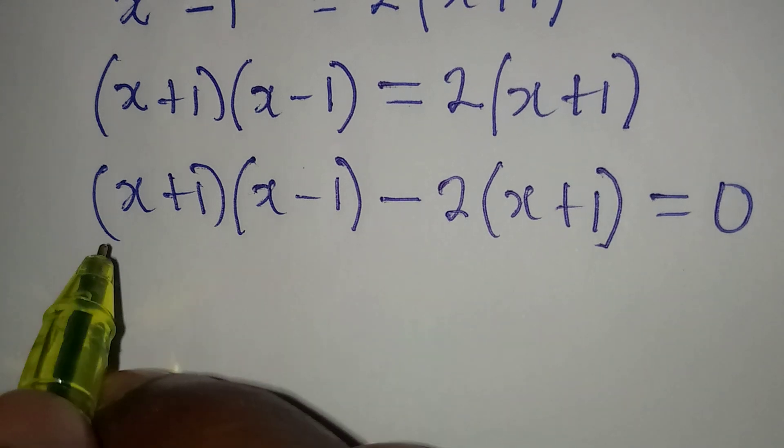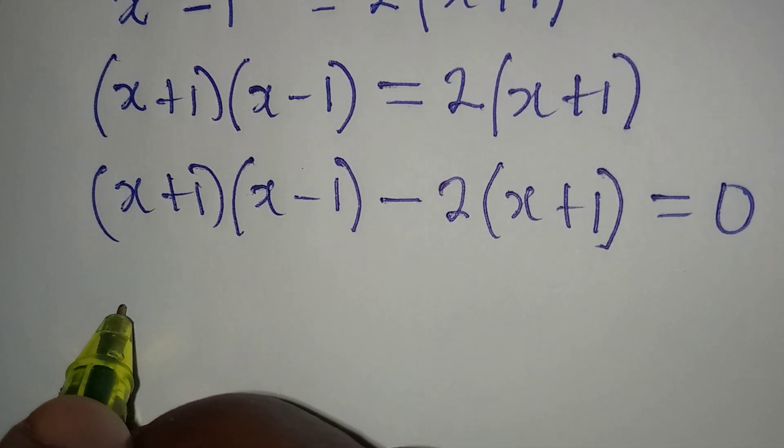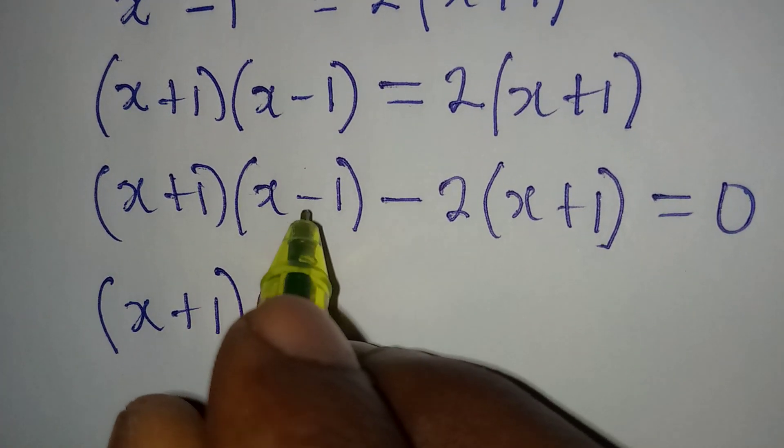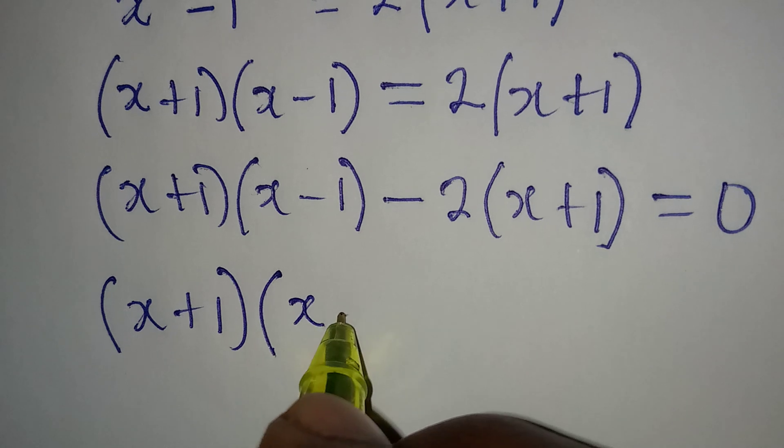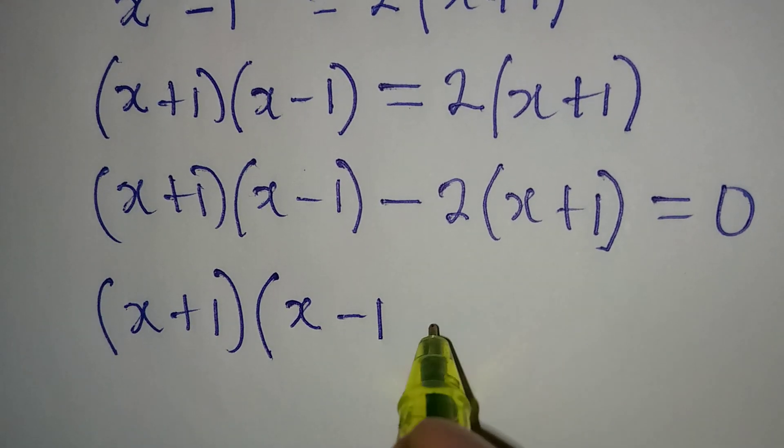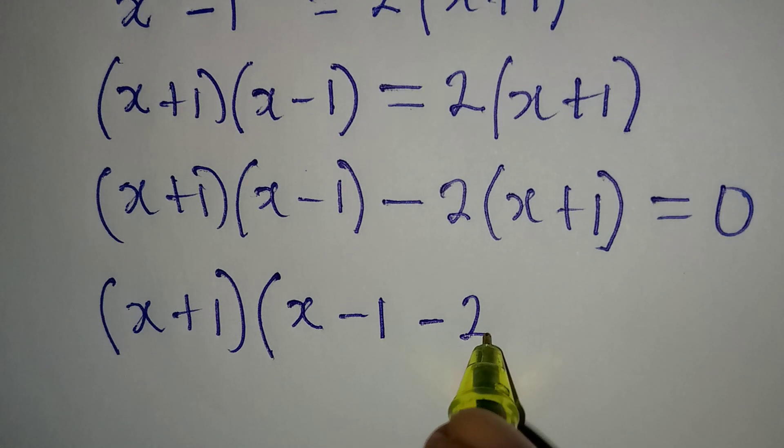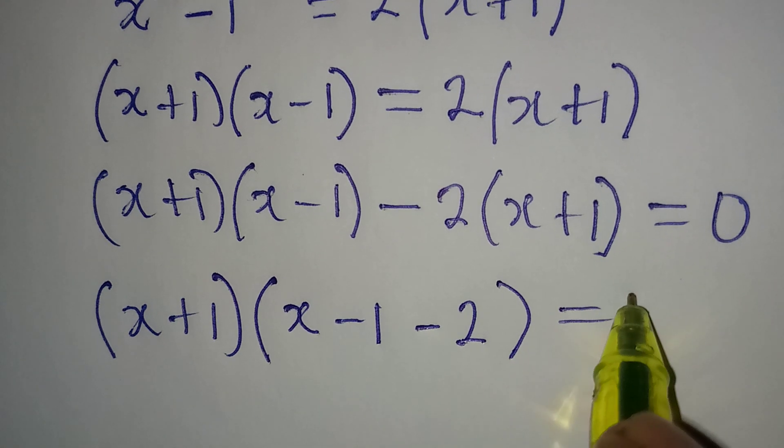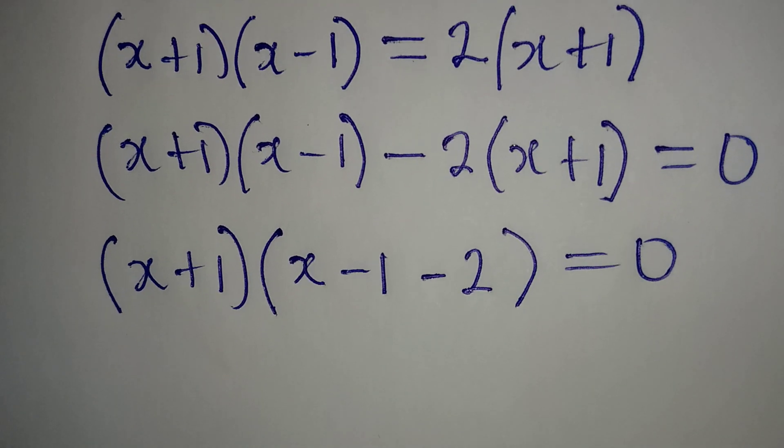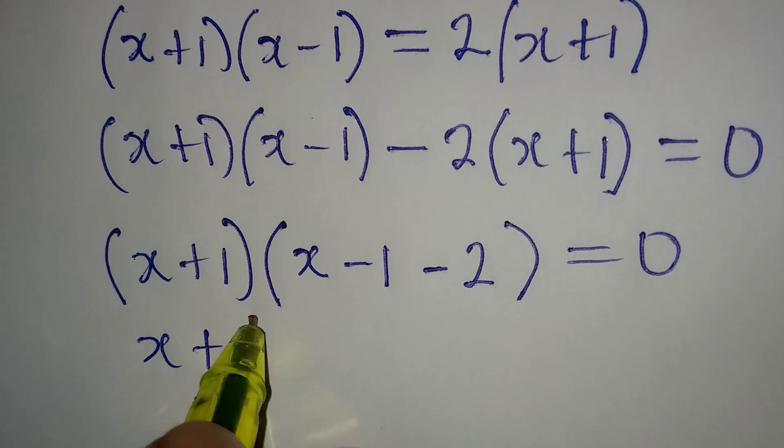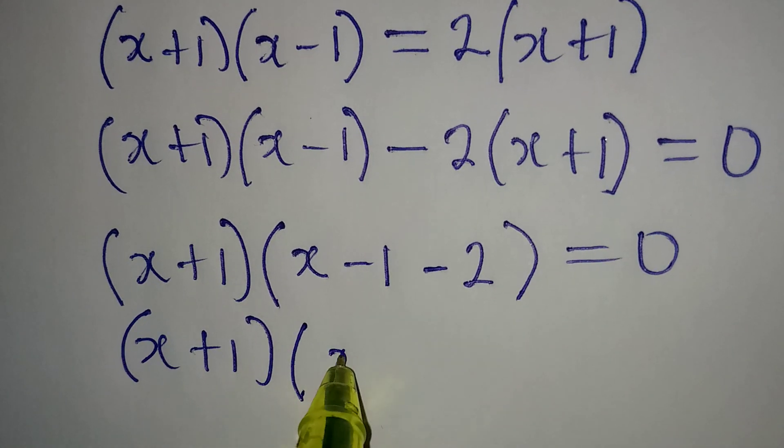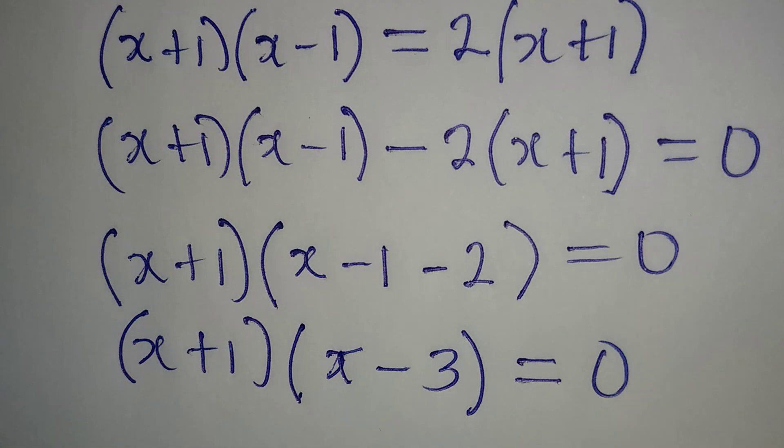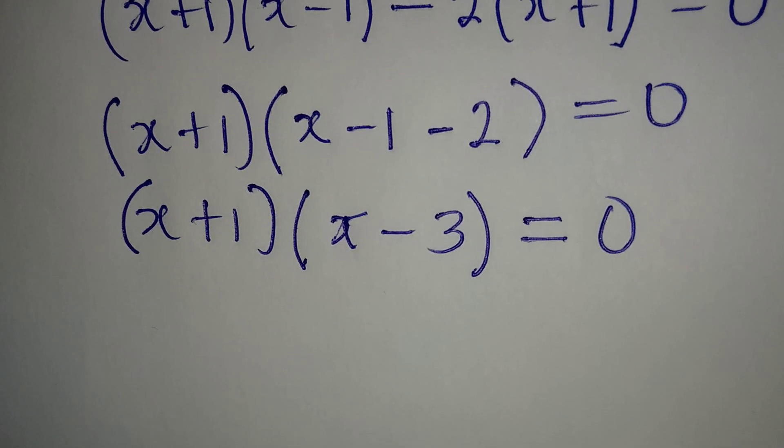From here, I have to factor out x plus 1 as the common factor, then here I have x minus 1, then here I have minus 2, so I can combine this. This is equal to 0, and then from here we have x plus 1, one of the factors, then x minus 3, the second factor, and then equal to 0.